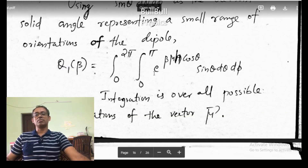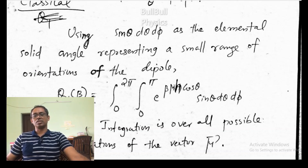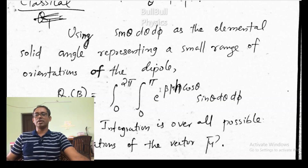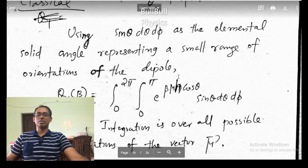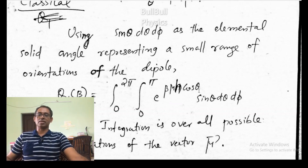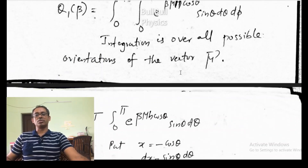So this is the single-particle partition function. The exponential term is e to the power minus beta times the Hamiltonian — the single-particle Hamiltonian is mu dot H, so that is mu H cos theta with a minus sign. The minus signs cancel each other. So we have the single-particle partition function with e to the power beta mu H cos theta as the integrand, with sin theta d theta d phi as the elemental solid angle. The integration is over all possible orientations: 0 to pi for theta and 0 to 2 pi for phi.